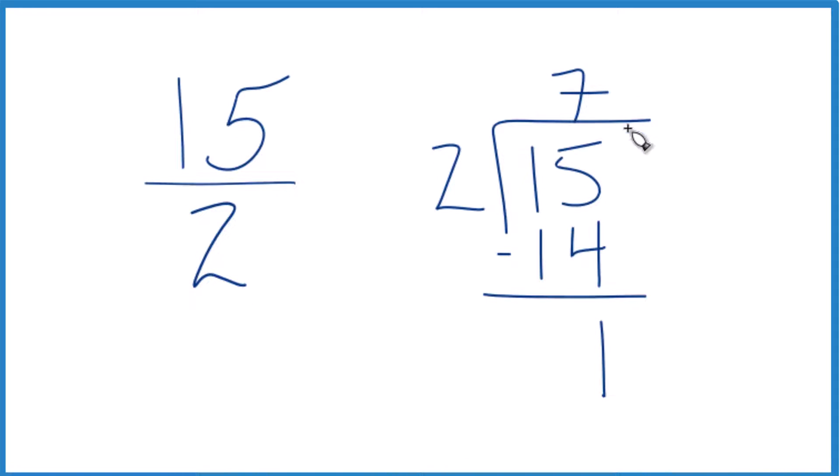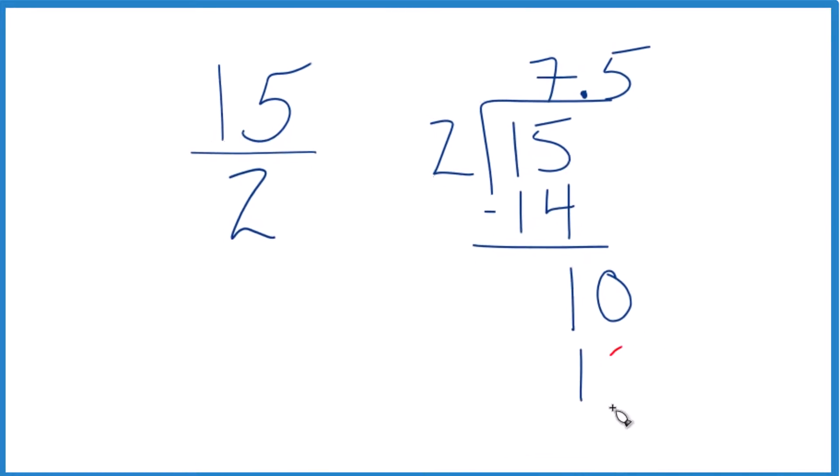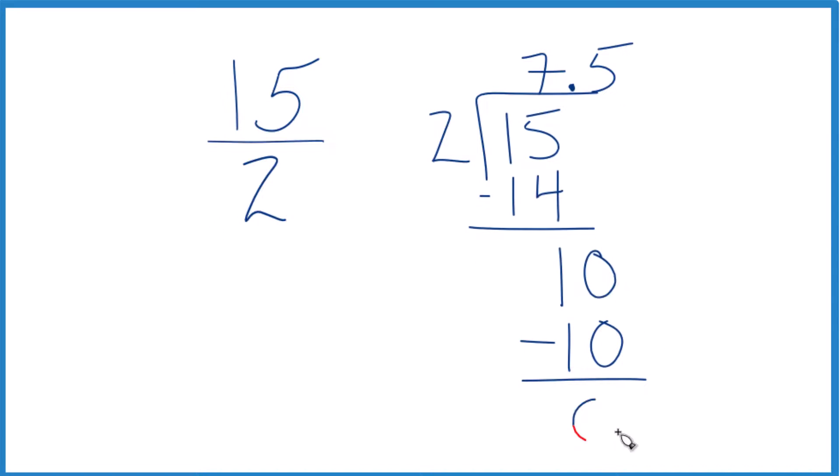2 doesn't go into 1, but if we put a decimal point up here we could call this 10. And now 5 times 2, that's 10. Subtract, no remainder.